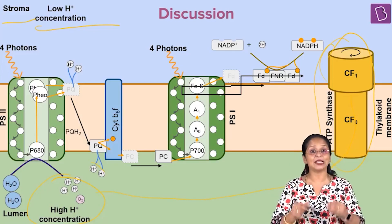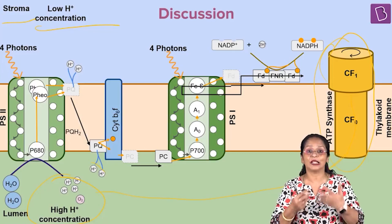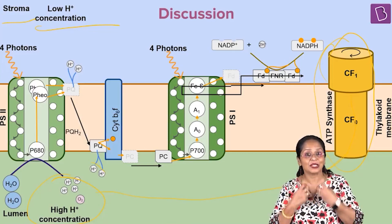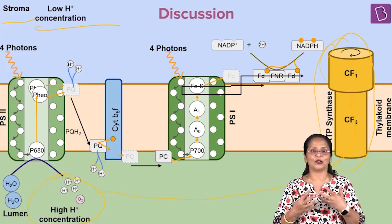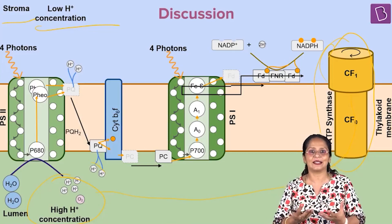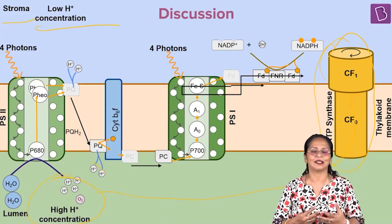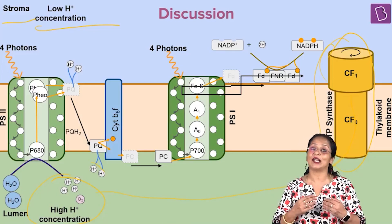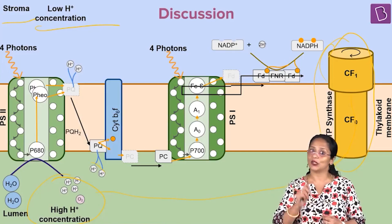That is called photophosphorylation. Why? Because all this happened in the presence of sunlight. That sunlight is what was trapped by chlorophyll, causing the excitation of the electrons and the protons that are released. And this is called photophosphorylation.